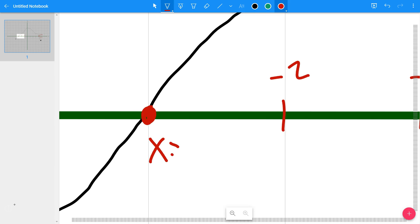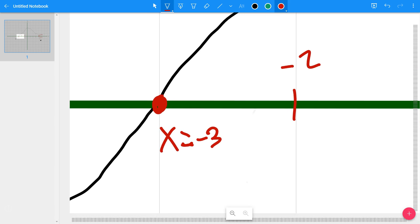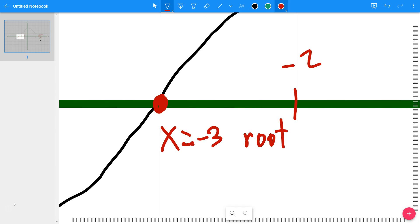So again, you can think of this in a couple different ways. You can think of the negative three as our root. We call it that because again, that's where the graph crosses the x-axis. The other possibility is if you want to use function notation, you would say f of negative three equals zero.